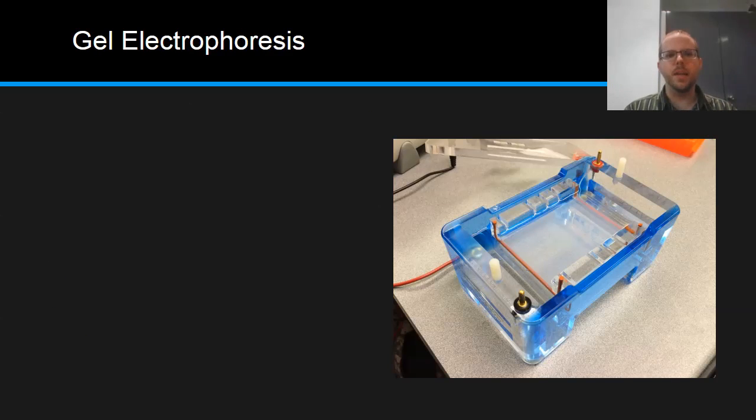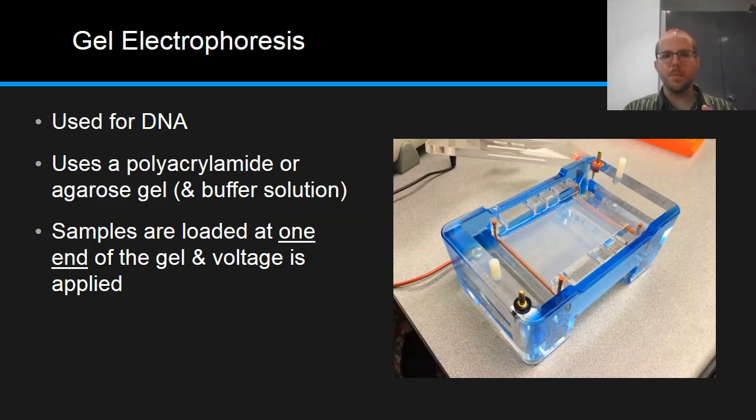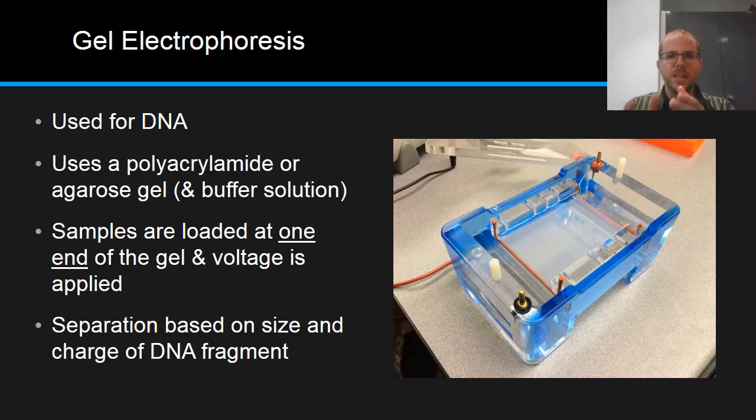Now we move on to think about the second type of electrophoresis, or gel electrophoresis. You can see an example of the setup in the image on the right. This is the type of technique we would use for DNA. Instead of paper, the porous paper, it uses a type of gel, which might be polyacrylamide, a specific type of polymer, or agarose, like you'd use to prepare an agar plate for bacteria cultures. We would also use a buffer solution for the same reason as before, to help conduct charge and also to maintain a specific pH. Samples are loaded at one end of the gel, and then we apply the voltage. We get the separation for DNA fragments based on both their size and their charge. Now, in a moment, I'll explain why we only load the samples at one end.